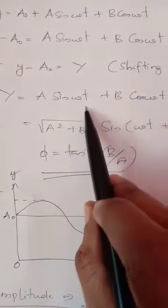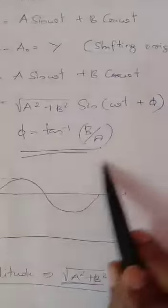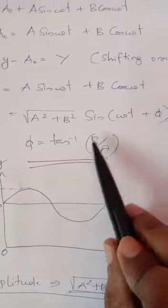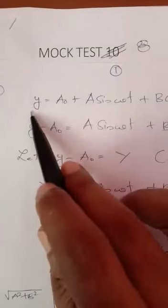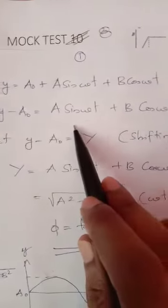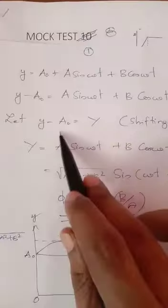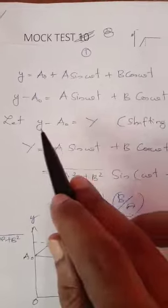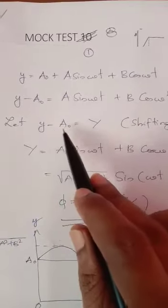Y equals a sin omega t plus b cos omega t, we have to remember this. But if you have a0 additional, then a0 equals a sin omega t plus b cos omega t. Then y minus a0.